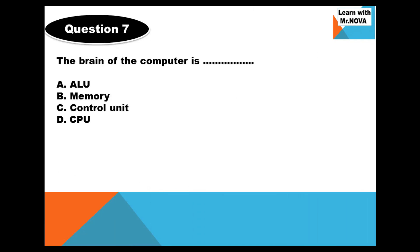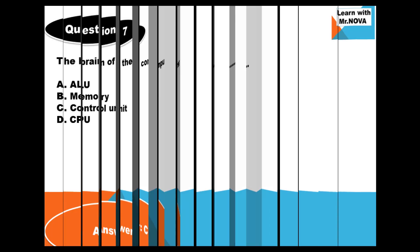Question 7. The brain of the computer is: A. ALU (arithmetic logic unit), B. Memory, C. Control unit, D. CPU (central processing unit). Five seconds to answer this question. The answer is D. The central processing unit.